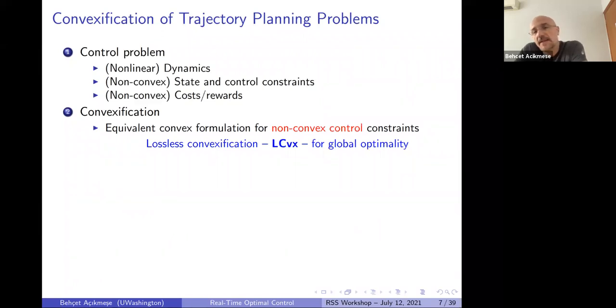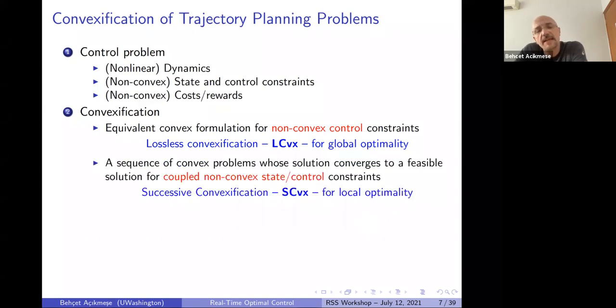And typically, in control problems that we deal with, there are dynamics. You know, the vehicle has some dynamics. There are state and control constraints. And there are costs and rewards that you have to optimize. They capture the mission objectives. And state and control constraints are, you know, you don't have maybe a control force or torque bigger than a certain amount, like saturation, typical constraint. State constraints typically come from safety or other considerations of that kind. And what do we do for convexification? Again, this is a bit of maybe my research, but it's also, you know, captures what others do, other researchers.